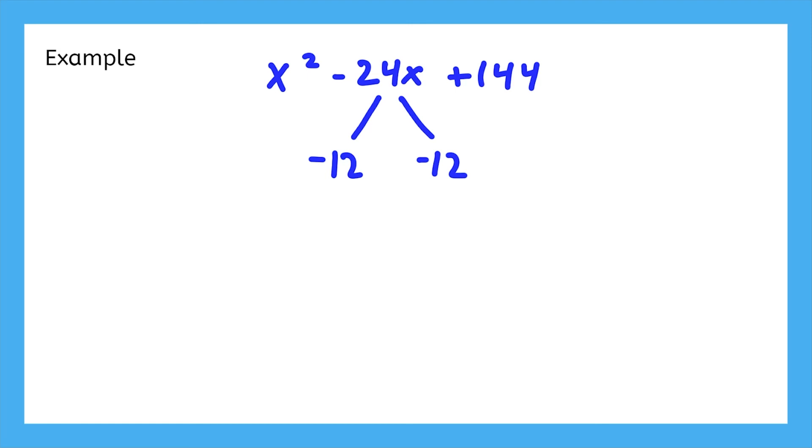That additional 144 has allowed us to complete the square. If we wanted to, we could factor this perfect square trinomial into x minus 12 squared.